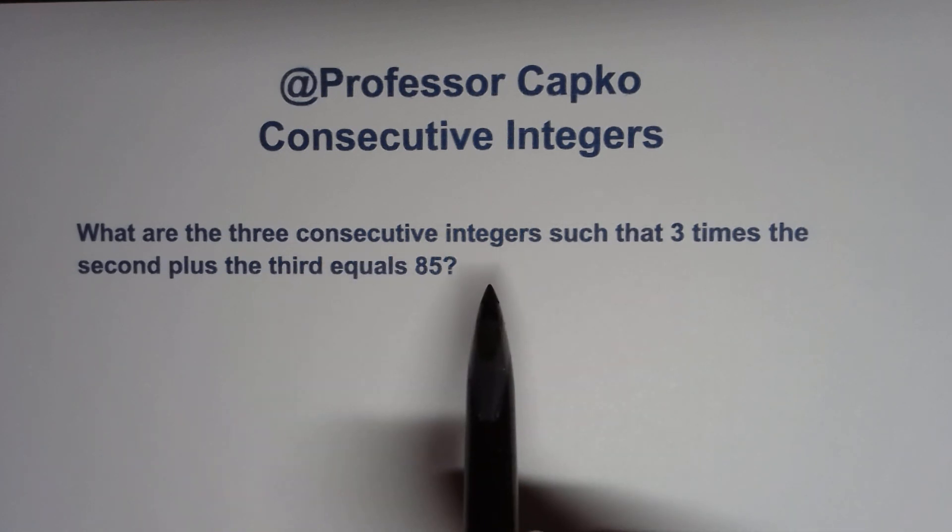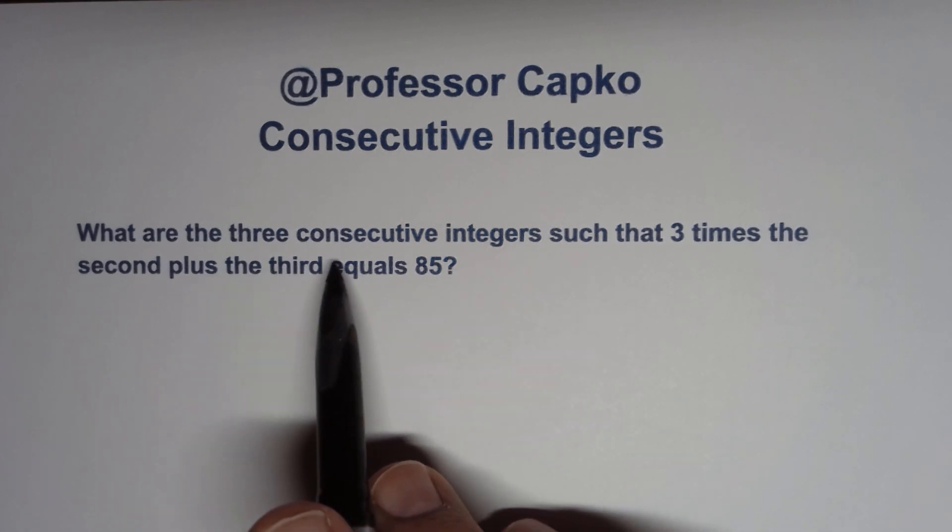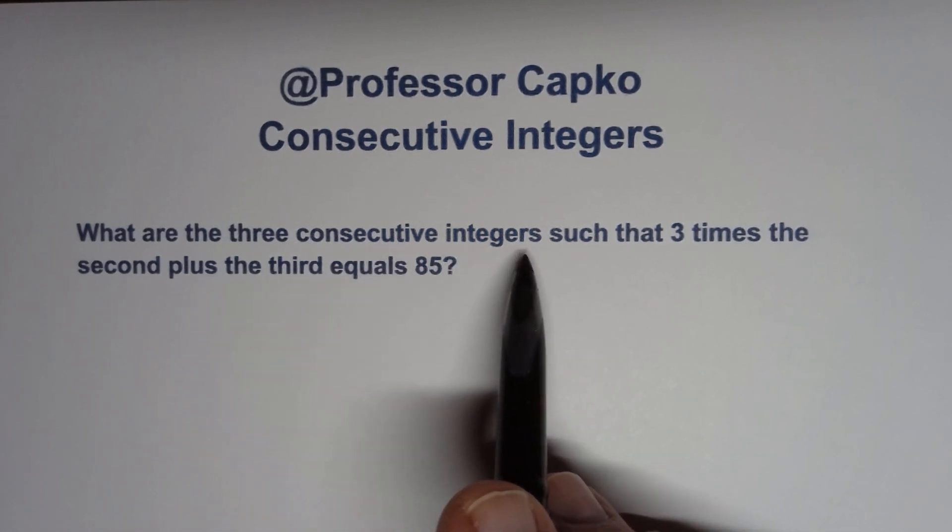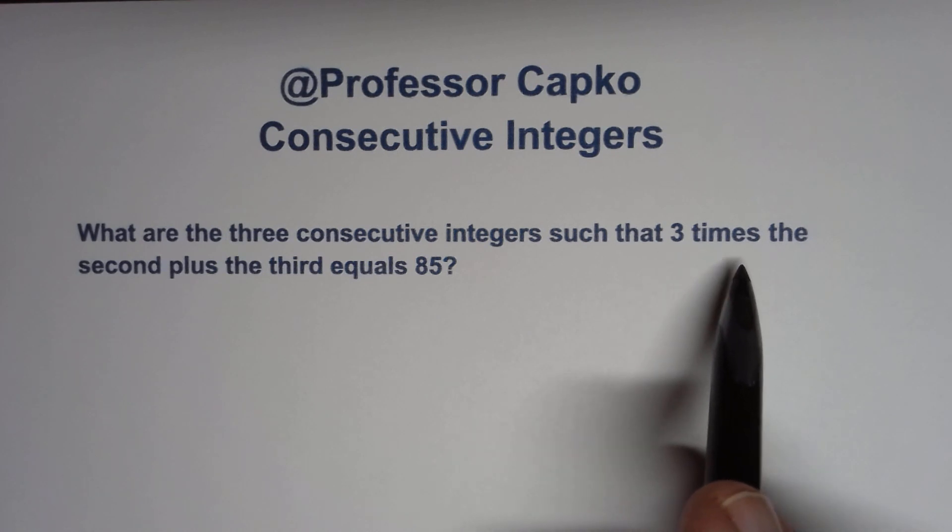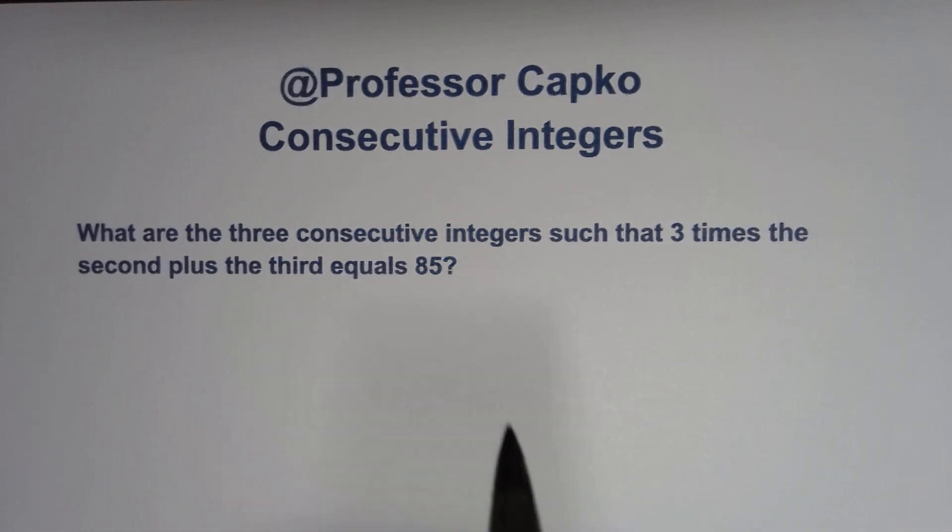In this problem, it says what are three consecutive integers such that three times the second plus the third equals 85?